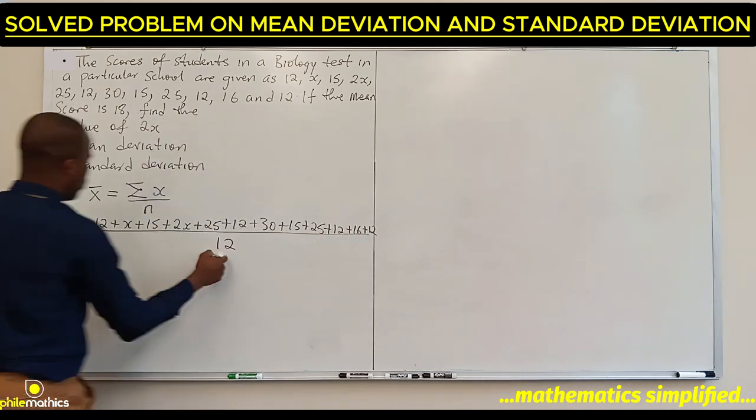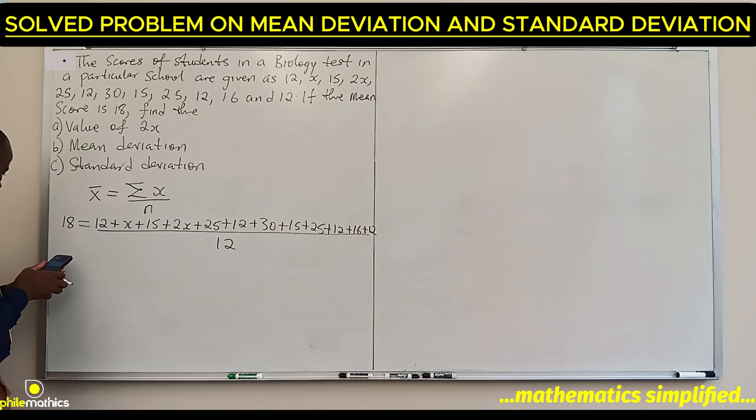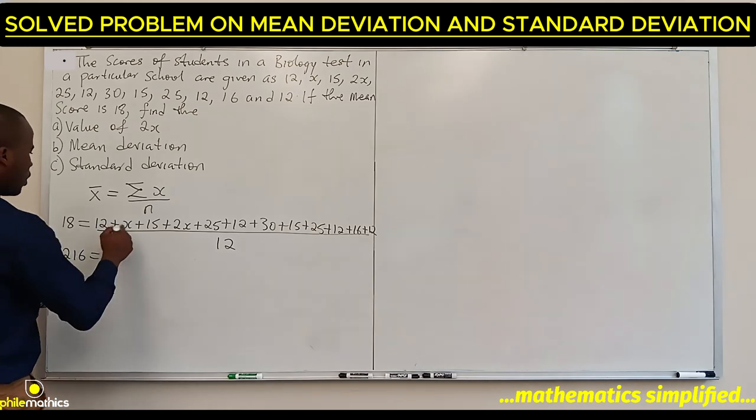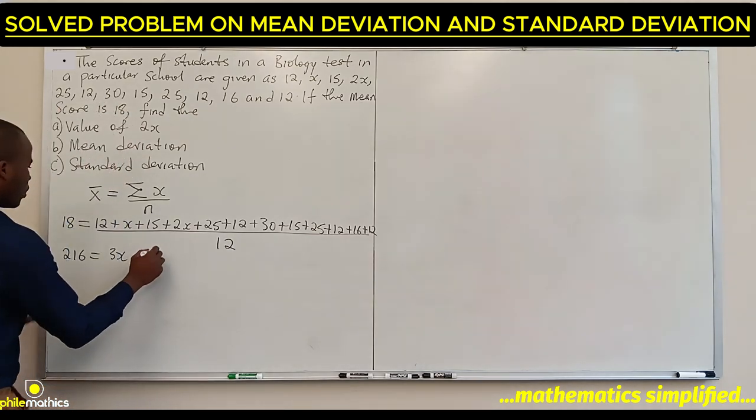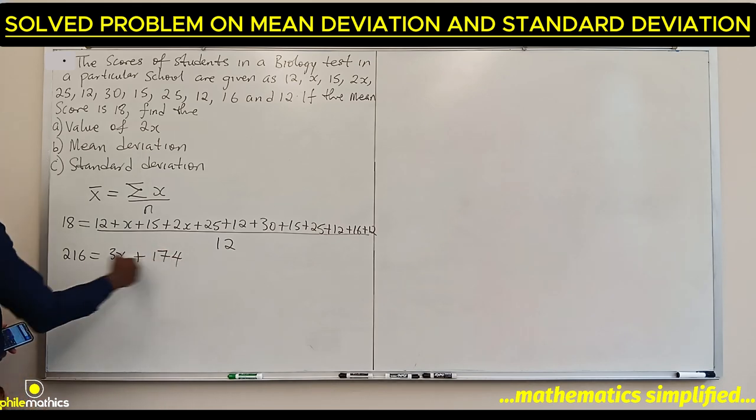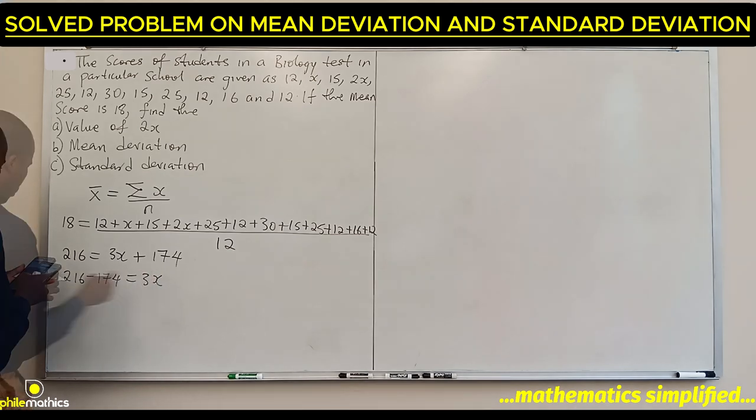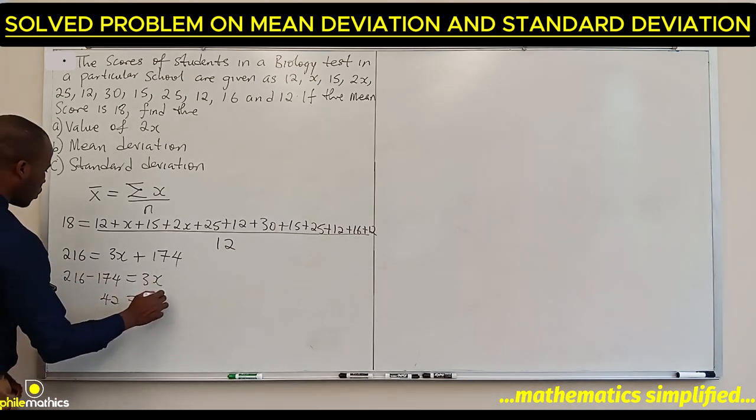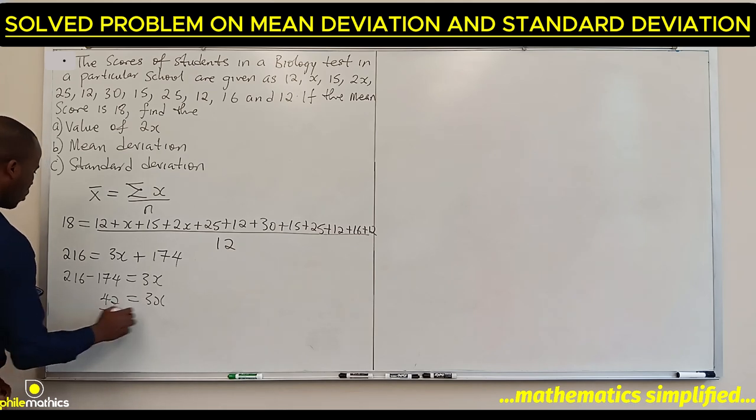If we multiply 12 by 18, we have 216. If we sum this up, x plus 2x is 3x and the rest is 174. Subtract 174 from both sides: 216 minus 174 equals 3x. We have 42 equals 3x. Divide both sides by 3.